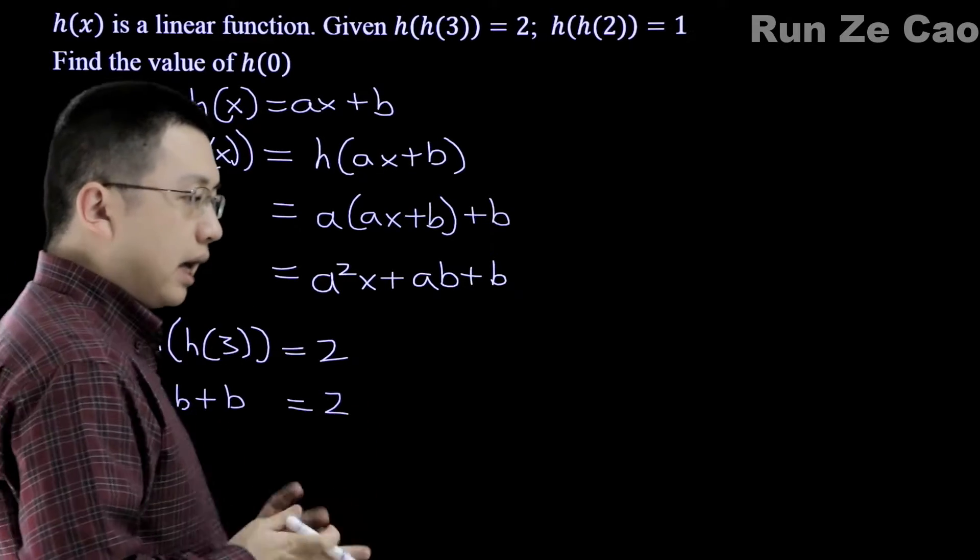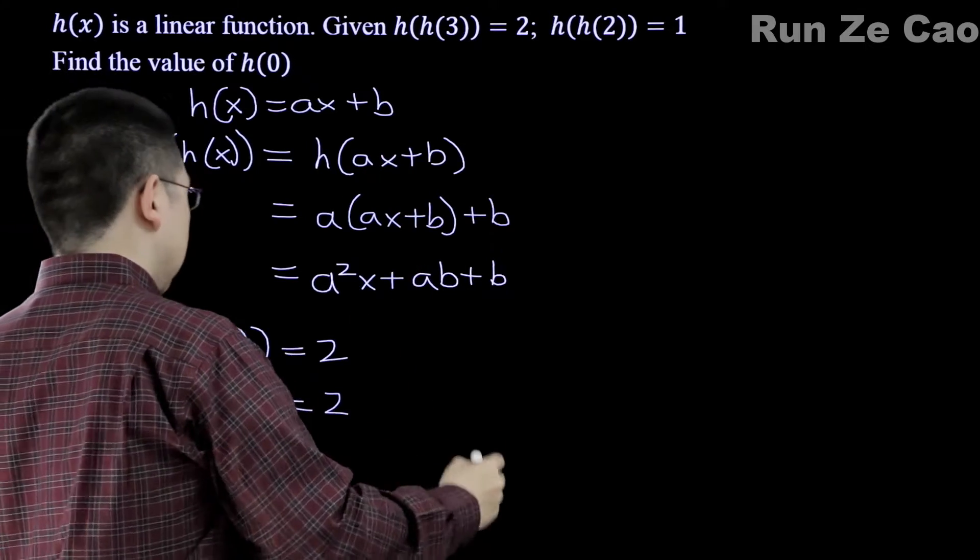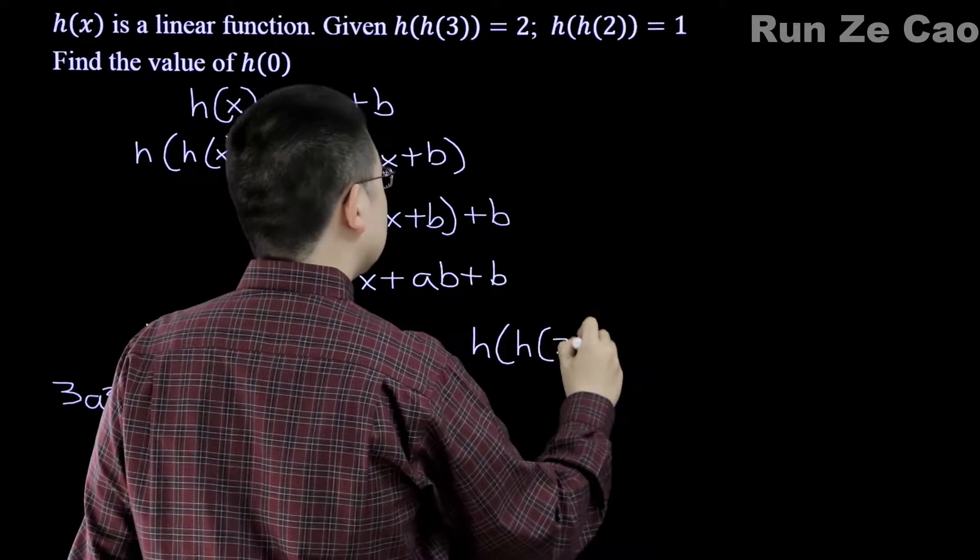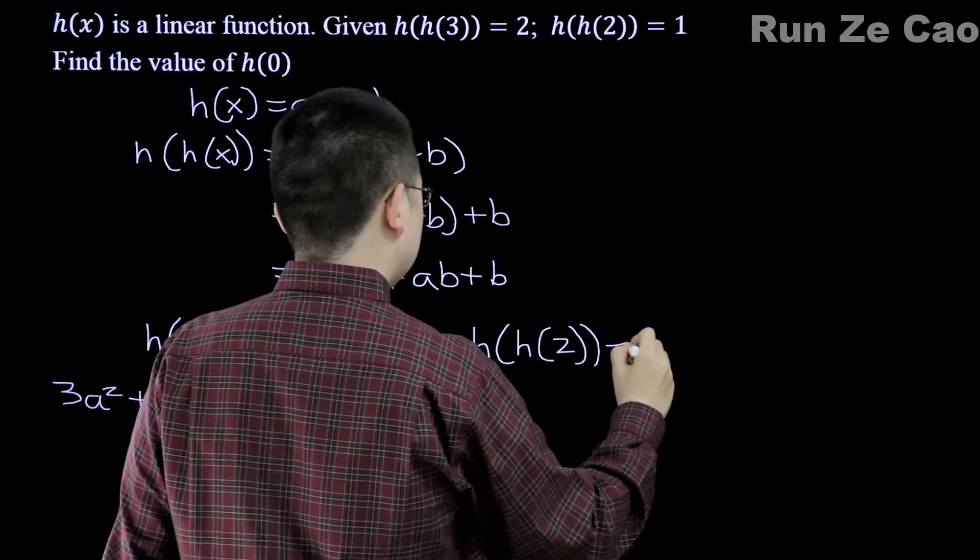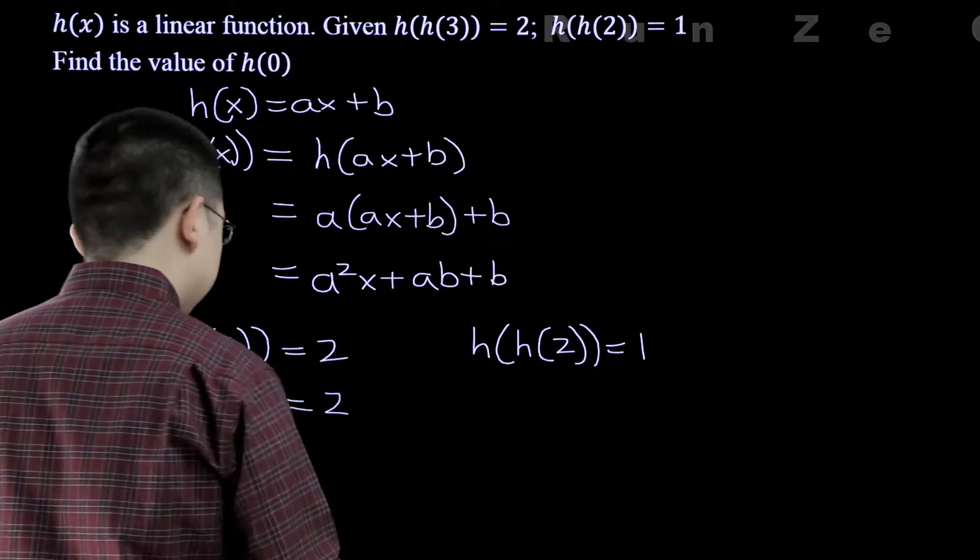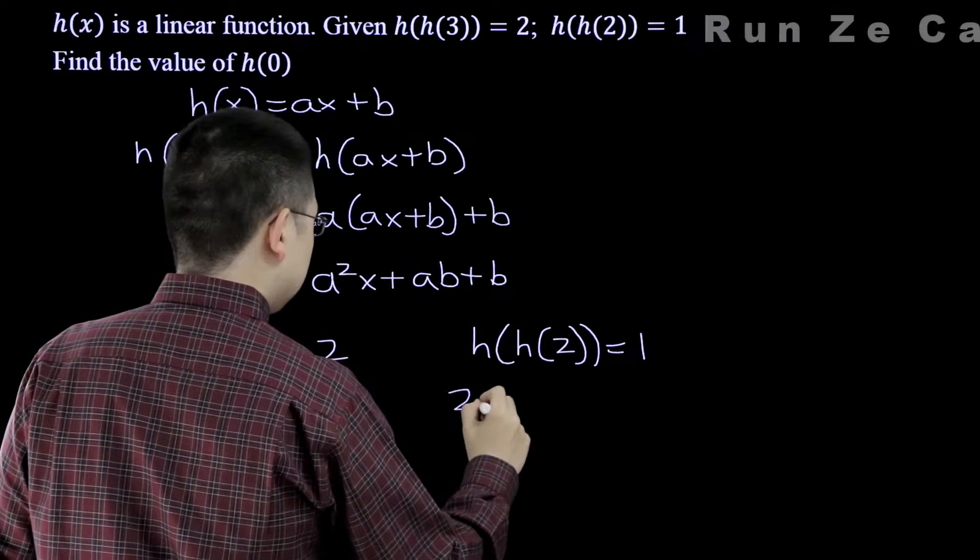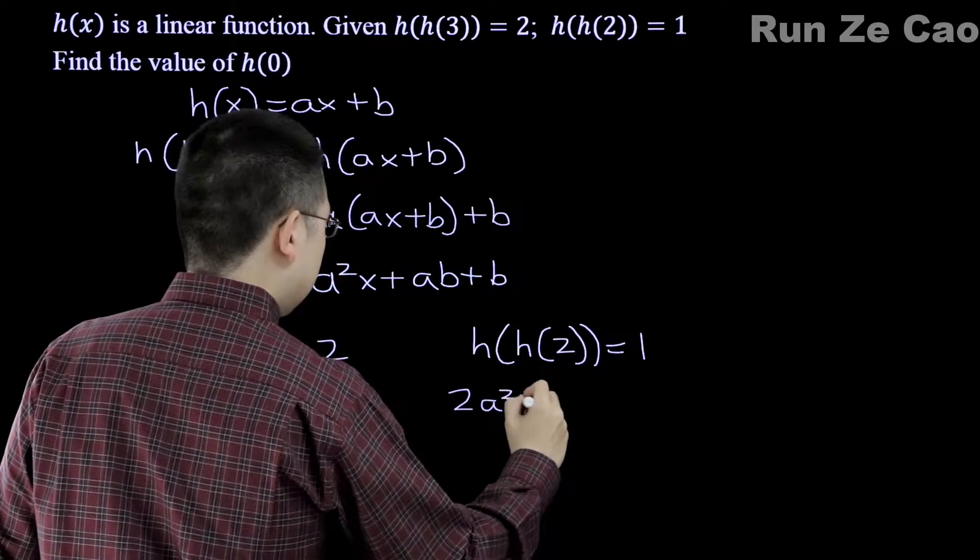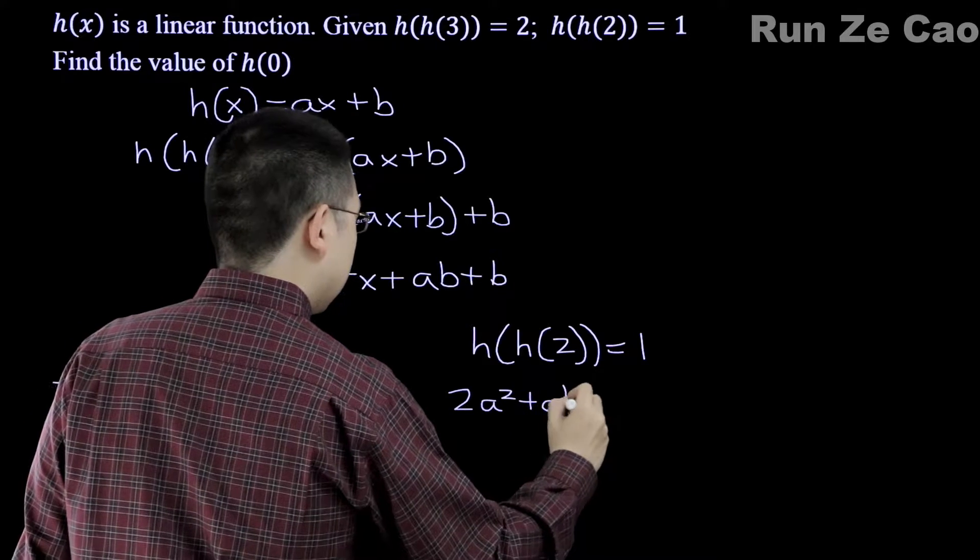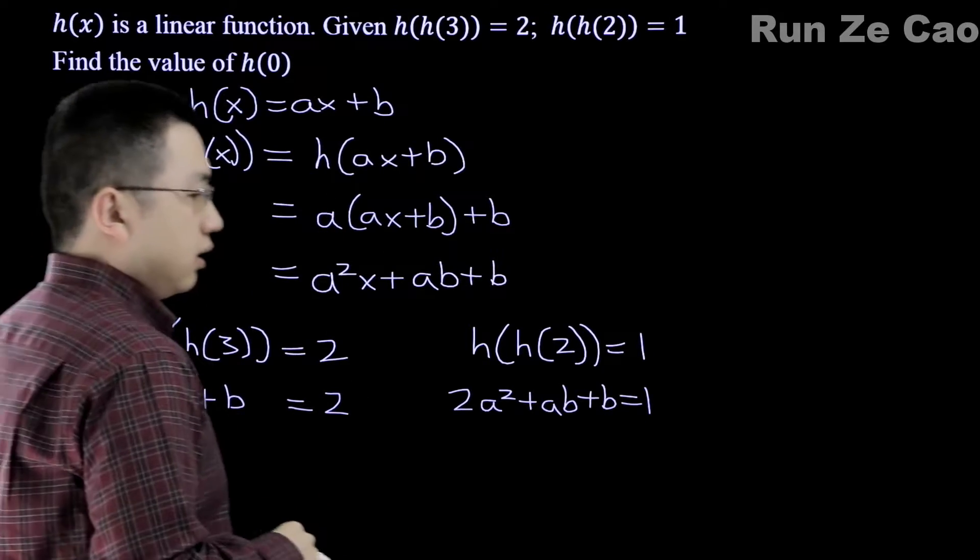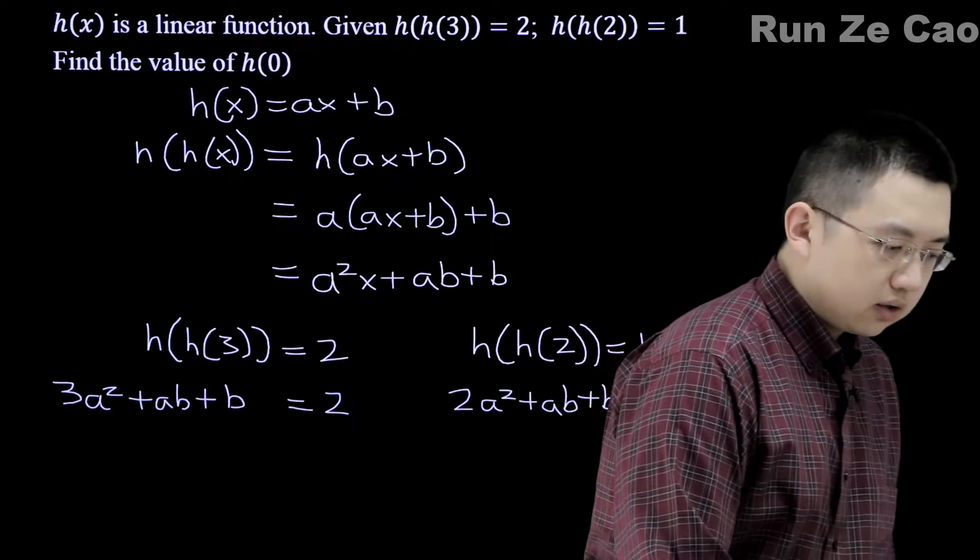Now we know that h(h(3)) is equal to 2. Therefore, 3A² plus AB plus B is equal to 2. What about the other one? h(h(2)) is equal to 1. So what we have here is 2A² plus AB plus B is equal to 1.